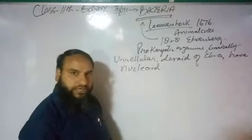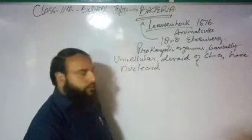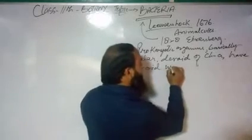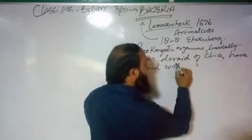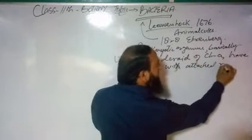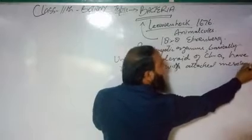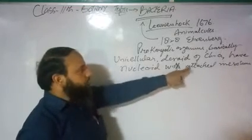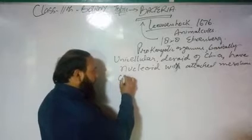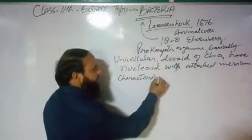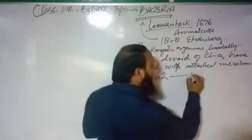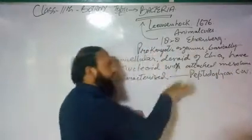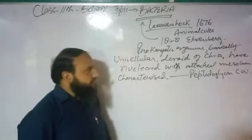The nucleoid is not associated with histone proteins and there is no nuclear envelope. They have a special structure called the mesosome, which plays a very important role. Bacteria are also characterised by the presence of a peptidoglycan cell wall. These are the main characteristic features and the definition of bacteria.